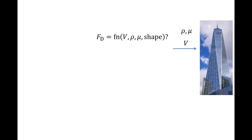The shape of the building will impact drag as well, and in order to describe the building's shape, we likely will need to specify dozens of different lengths. Each of these lengths are variables which would have to be included in the equation for predicting drag. If there are dozens of variables, dimensional analysis will yield dozens of pi terms, and this means we would need to conduct many, many experiments to get a general equation for drag for a building. This could be quite cost prohibitive.